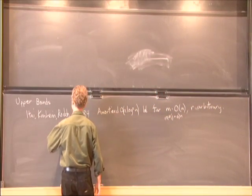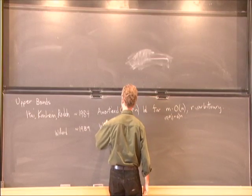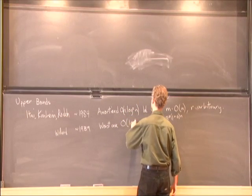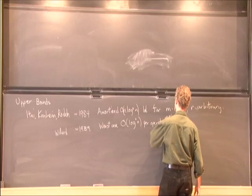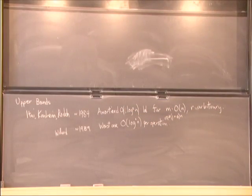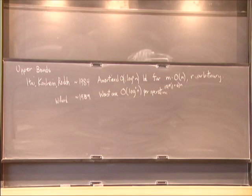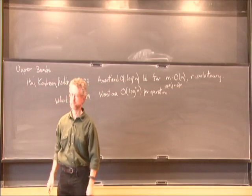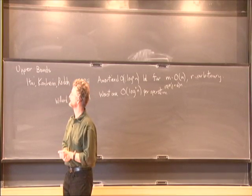Willard followed up around 1989 with a worst case per operation bound. The total cost is at most n log² n, amortized log² n per operation. Actually, in Willard's result it's worst case per operation. The other version of this problem appearing in the literature is called online labeling.